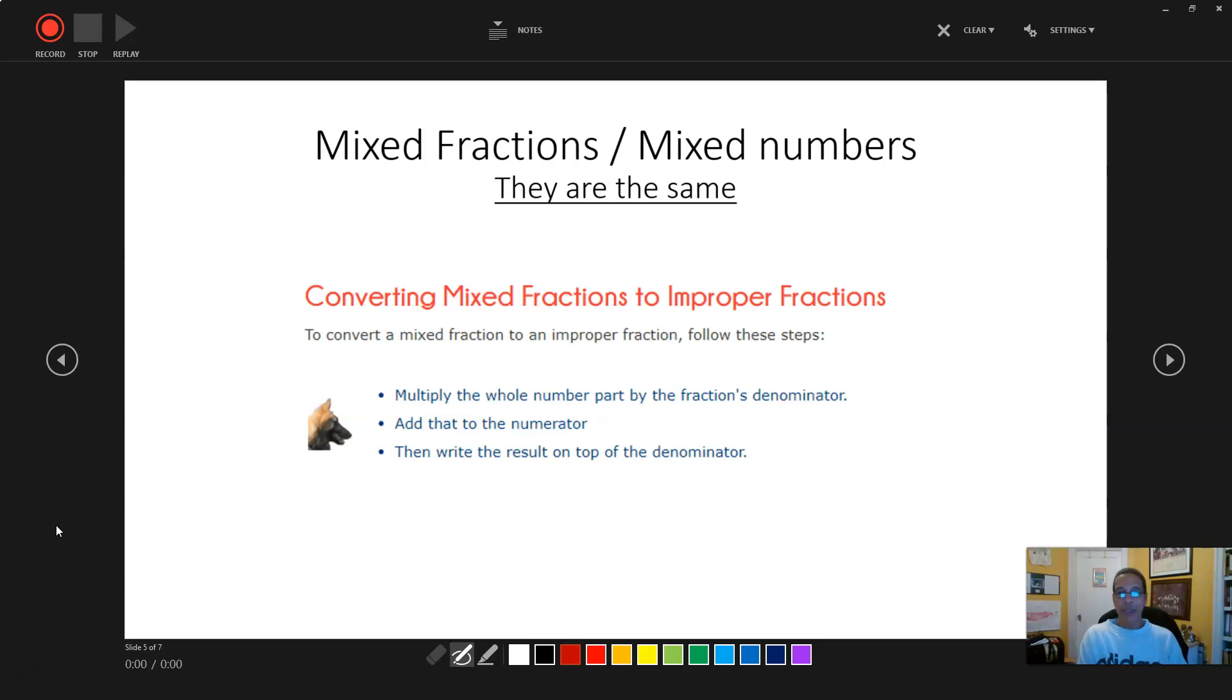So what we're going to do is convert mixed fractions to improper fractions. The way you do that is you multiply the whole number times the denominator. And then you add the numerator. And once you've done that, you just put the total on top of the denominator.